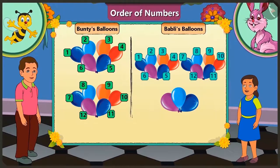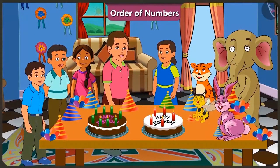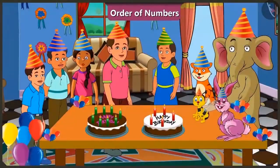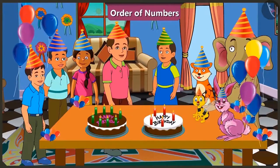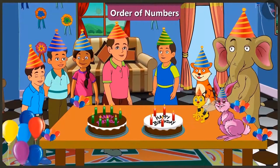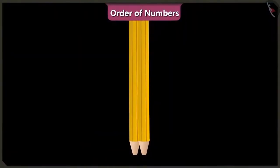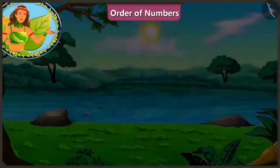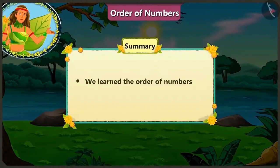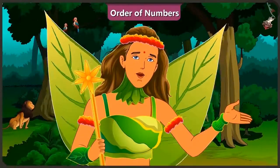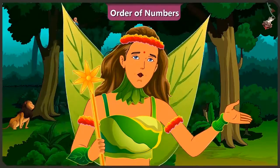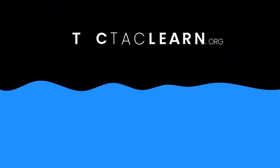Now tell me, how many more balloons does Bubbly have? Here is 1 balloon of Bunty's, here 1 of Bubbly's. Both of them have 2, 3, 4, 5, 6, 7, 8, 9, 10, 11, 12 balloons matched. Bunty is left with no more balloons, but Bubbly still has 3 balloons left. So we can say that Bubbly has 3 more balloons than Bunty — that is, she has 15 balloons.